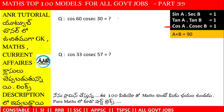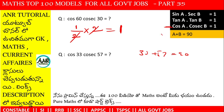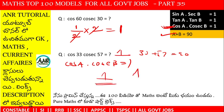Using the third formula directly, the answer is 1. Or, using the normal method: cos 60 value is 1 by 2, into cosec 30 value is 2, so 2 cancels and the answer is 1. Similarly, cos 33 into cosec 57 also follows the third formula — cos a into cosec b equals 1 — so the answer is 1.